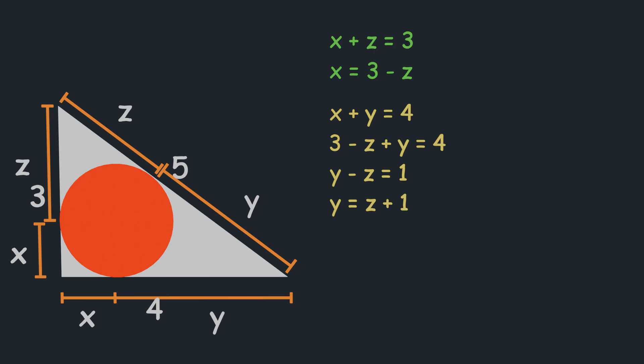Now, final equation will be z plus y equals 5. And in this equation, we can put value of y. And we will get z plus z plus 1 equals 5. Now, if we subtract 1 from both sides, we will get 2z equals 4. And now, divide both sides with 2, and we will get z equals 2.